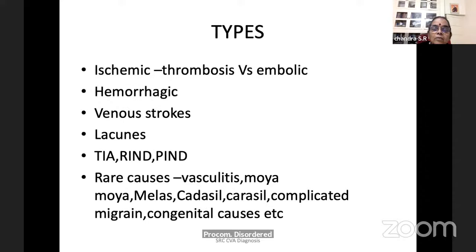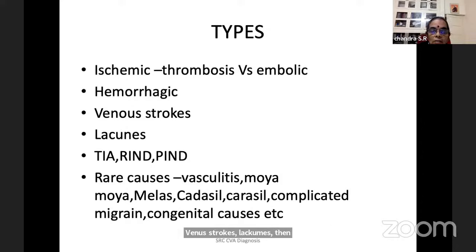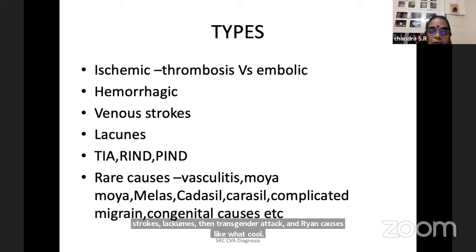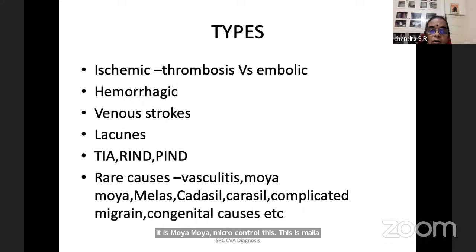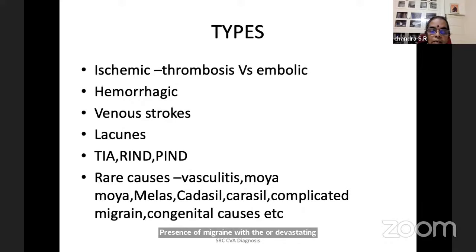You can have ischemic stroke — thrombosis versus embolic — hemorrhagic stroke, venous strokes, lacunes, transient ischemic attacks, and rare causes like vasculitis, Moya-Moya, mitochondrial disease, MELAS, CADASIL, and CARASIL. CADASIL is cerebral autosomal dominant disease and CARASIL is the recessive form — genetically determined presence of migraine with devastating complications and dementia. Then complicated migraine and congenital anomalies.